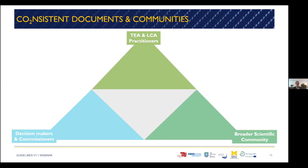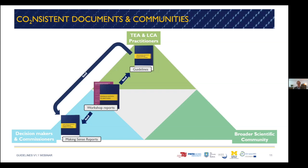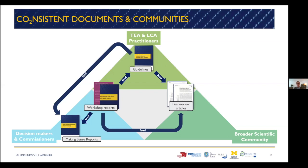The CONSIST project has three different target audiences or communities: practitioners — so TEA and LCA practitioners — decision makers and commissioners, and the broader scientific community. The guidelines are largely addressed to practitioners, people who are running and organizing these studies. We held a series of workshops for decision makers and practitioners, and the results of these workshops were summarized in reports and helped to improve the guidelines. Based on the guidelines and feedback of these workshops, we produced a so-called 'Making Sense of TEA and LCA' report, targeted towards decision makers and commissioners. The guideline 1.0 and the workshop results were also published as peer-reviewed articles for the broader scientific community, and we published a set of worked examples for all communities.